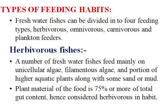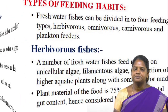What is meant by herbivorous fishes? A number of freshwater fishes feed mainly on unicellular algae, filamentous algae and portions of higher aquatic plants, along with some sand or mud. Plant material constitutes 75% or more of total gut content, and hence these fishes are considered herbivorous in habit.